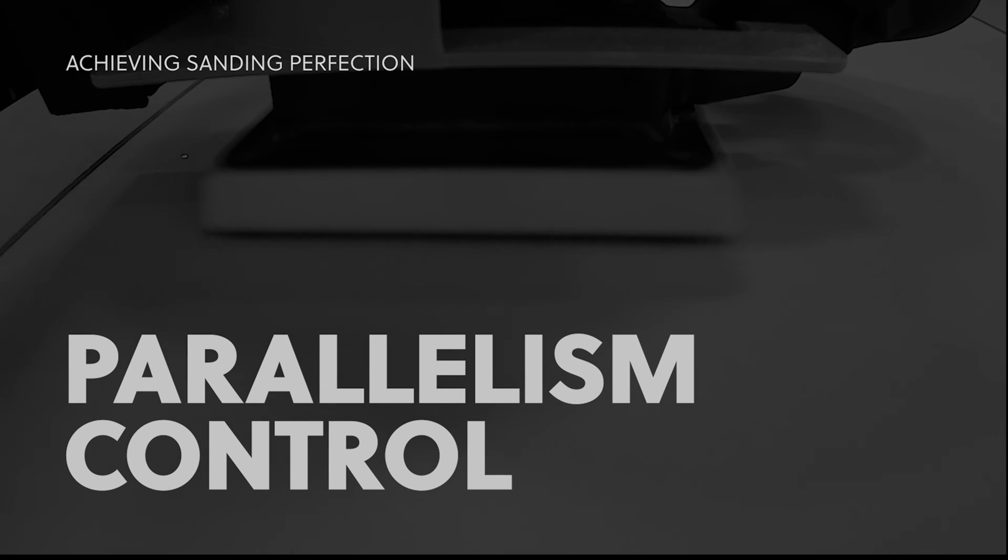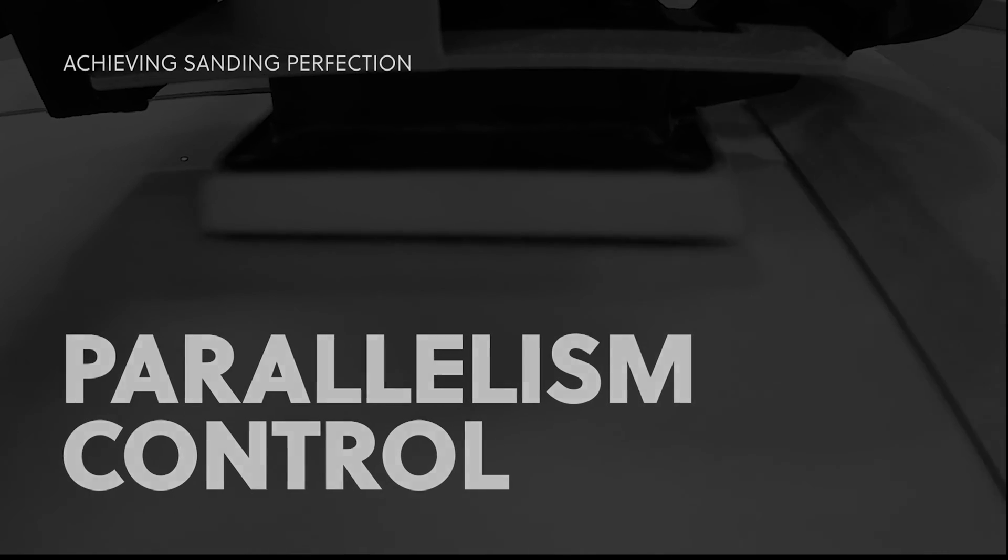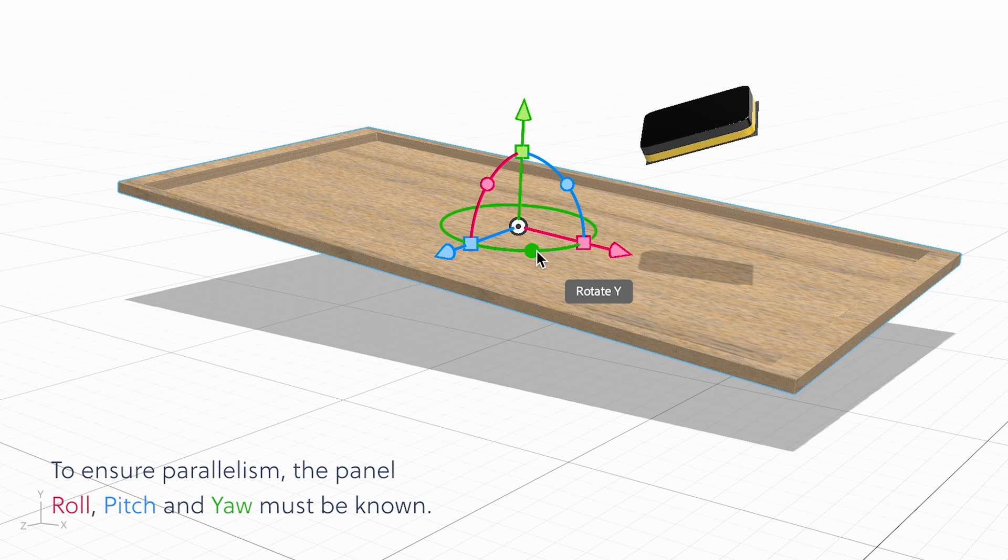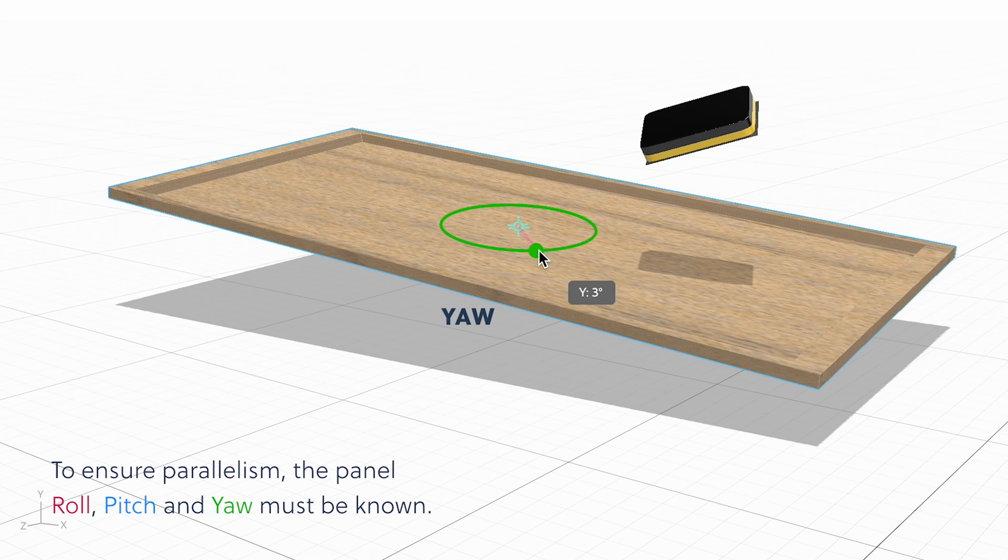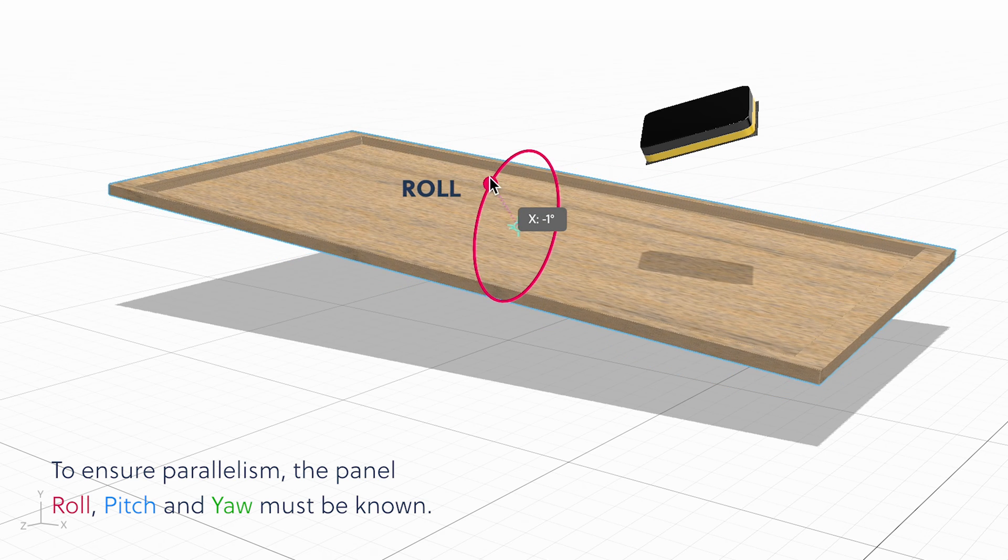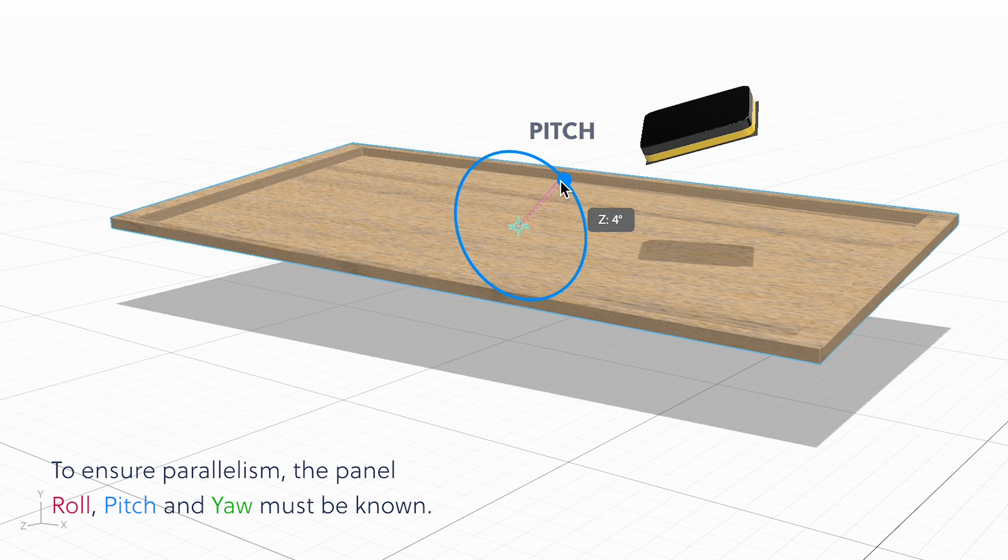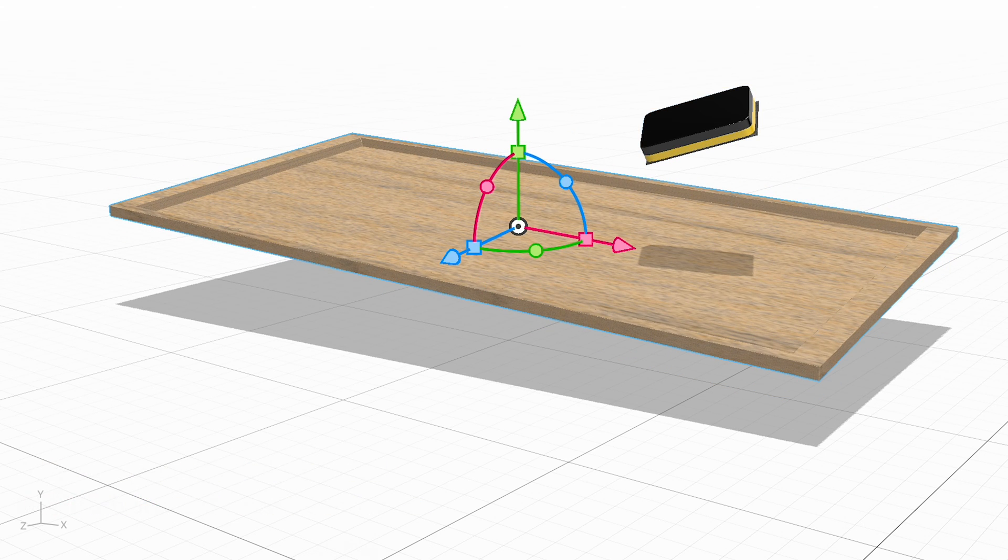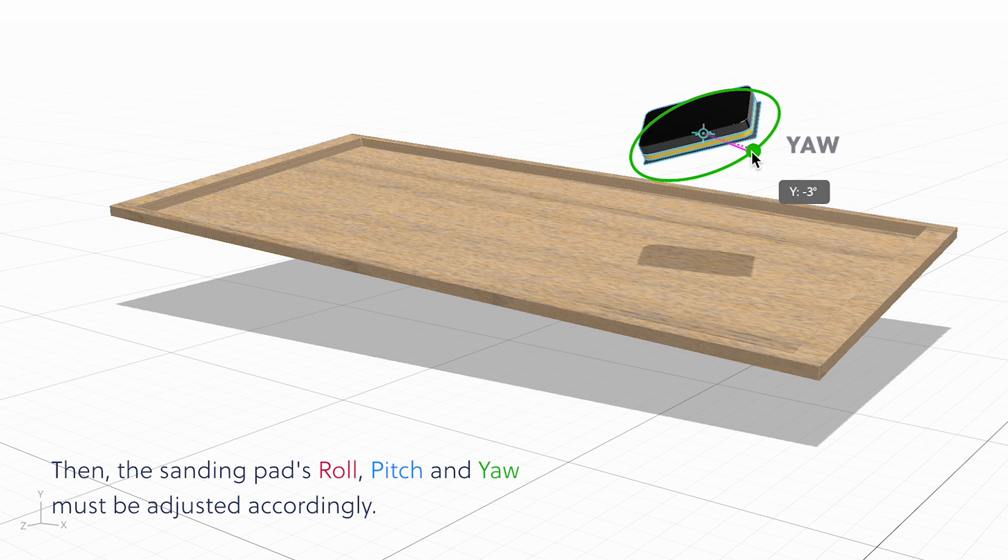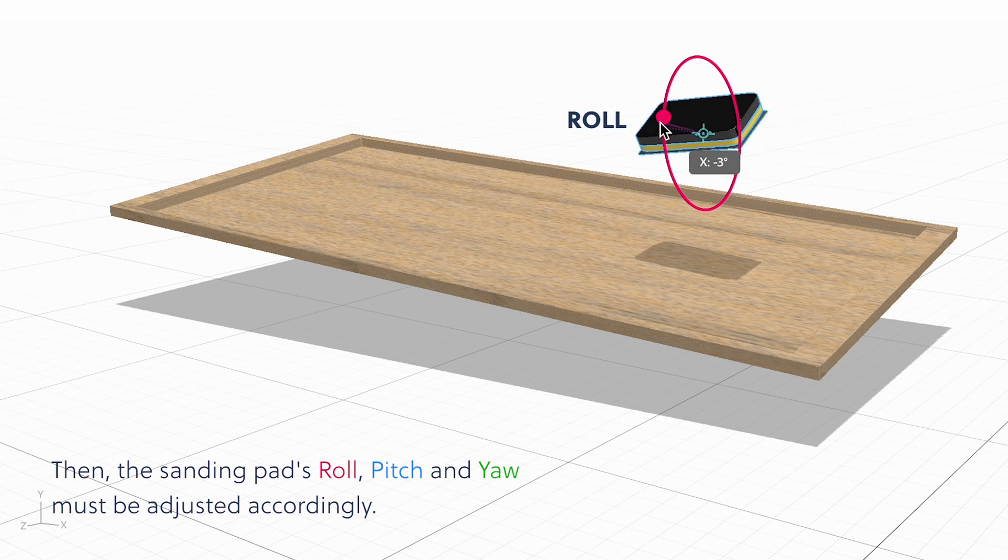Parallelism control. To ensure parallelism, the panel roll, pitch, and yaw must be known. Then, the sanding pad's roll, pitch, and yaw must be adjusted accordingly.